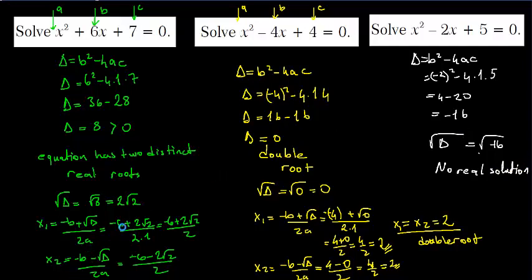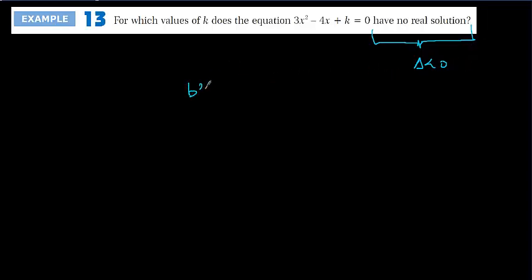Now, there may also be questions about the discriminant involving a parameter. This question asks: for which values of k does the equation have no real solution? No real solution means delta less than 0, so we need b squared minus 4ac less than 0.